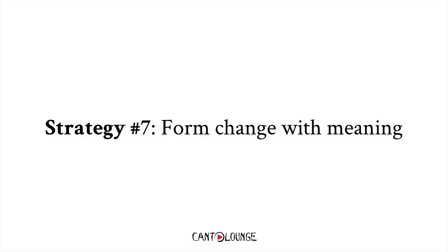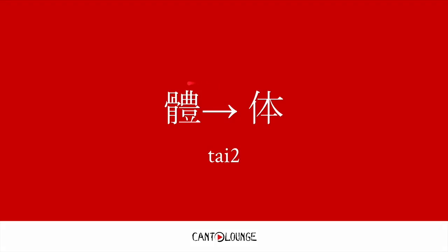Strategy number 7 would be a form change with meaning. For example, the character for body, 體, they just changed it completely to this character. There's a radical for person, and then there's a component for 本, which means base. The meaning of this is 以人为本, with the human as a base. Apparently that is associated with a body.